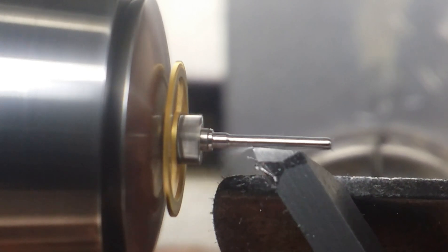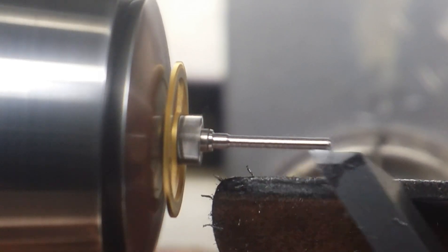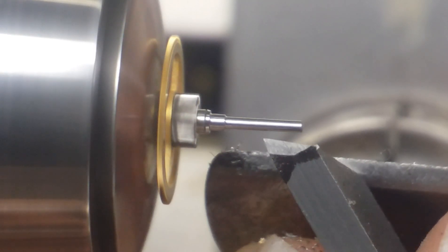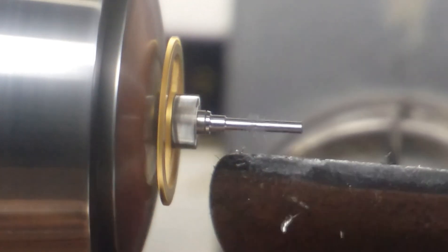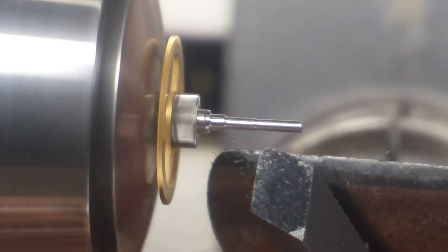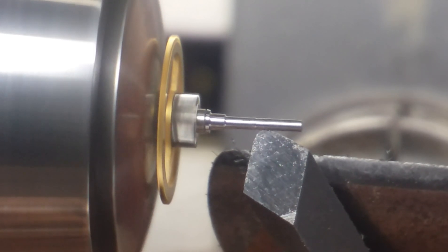There's ever so small of a chance that the arbor will pull out of the hollow pinion we've created. This little step will create something that will stop it against the base plate as we're pulling off the cannon pinion.